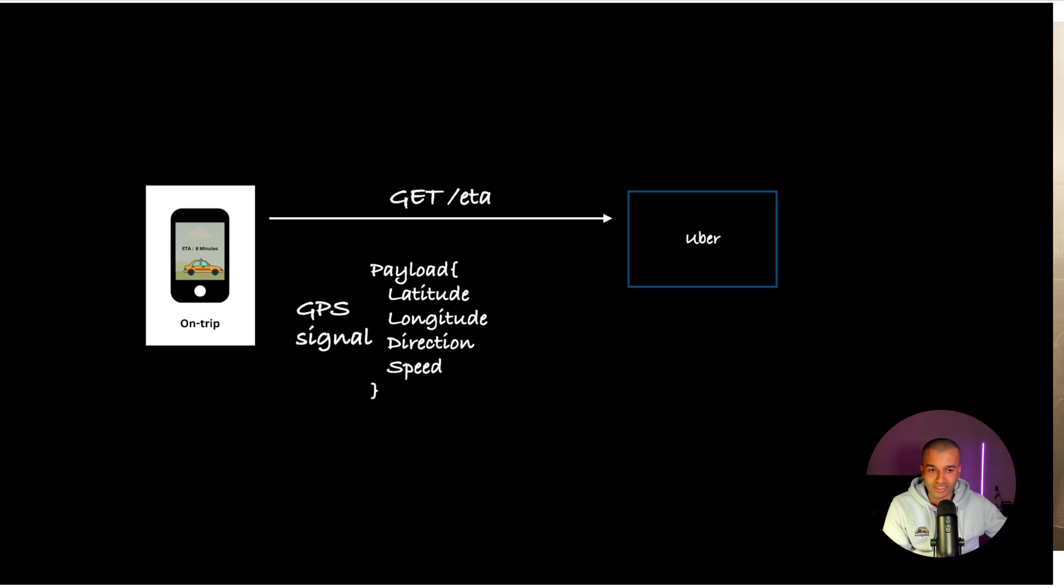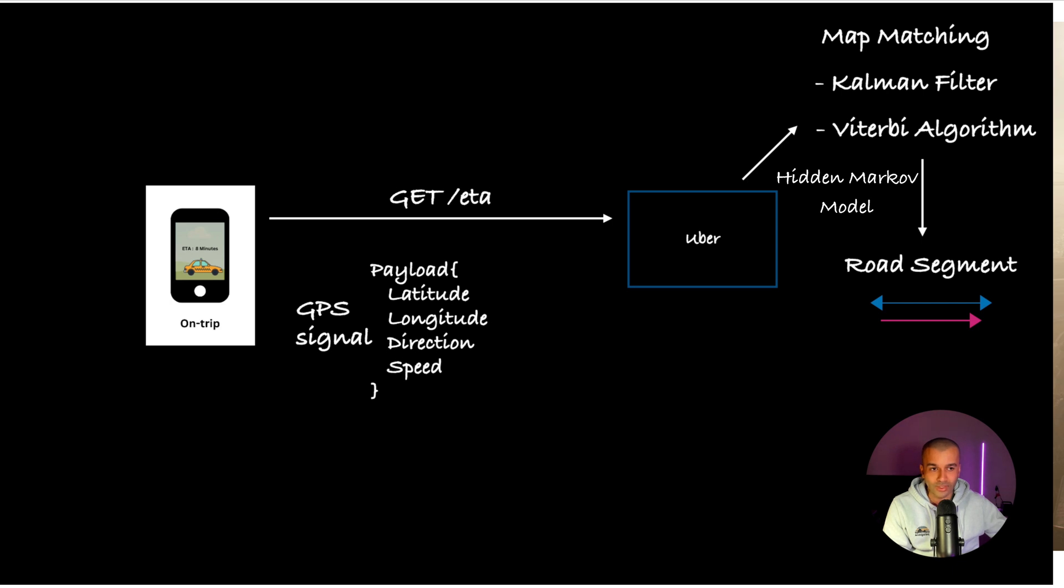So Uber does map matching where it puts in potentially faulty GPS signal inputs, and through a couple of algorithms it's able to derive the appropriate road segment. These are basically guessing algorithms where if you put in a faulty input, it will still spit out the correct output. So with faulty GPS signal, it will find the correct road segment.